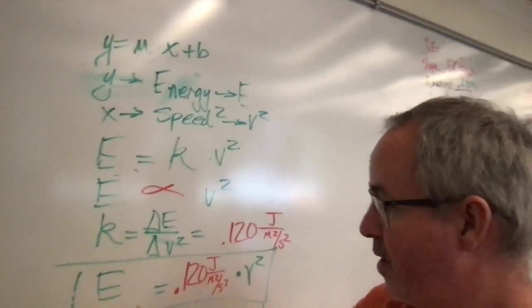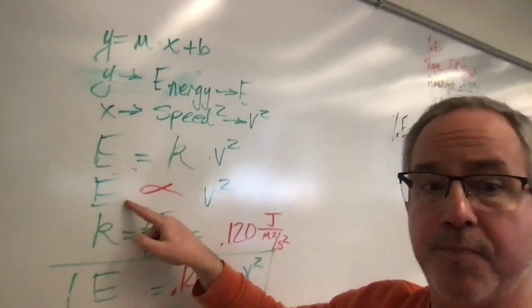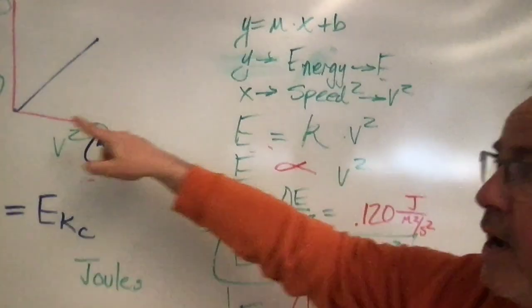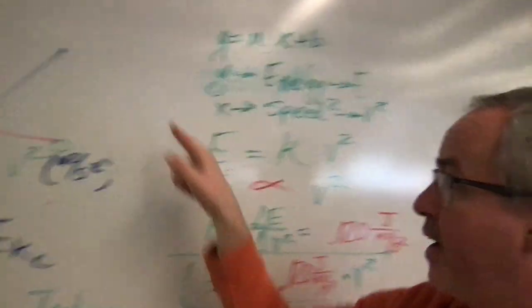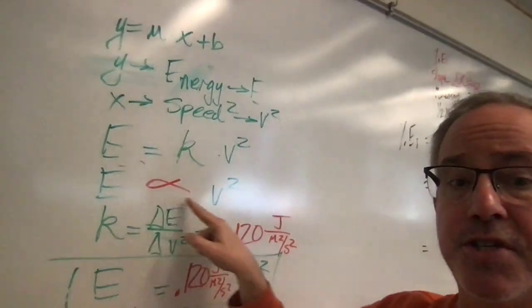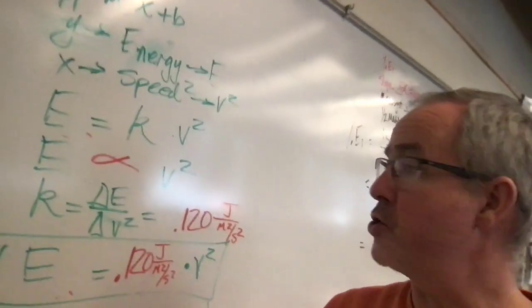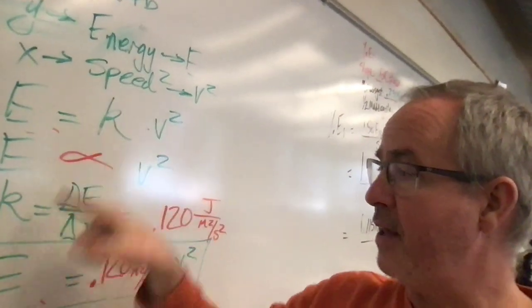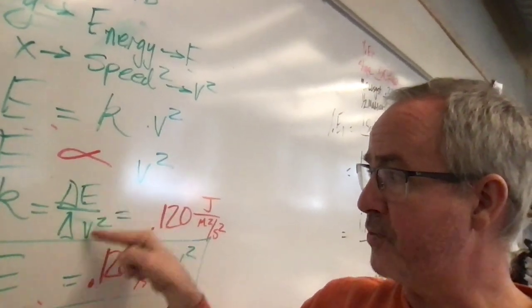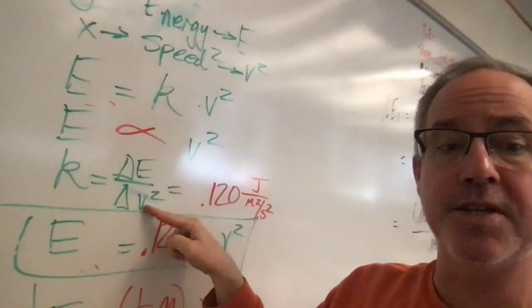And because we have a y-intercept that is zero and a positive constant slope we can now say that energy and speed squared is directly proportional. Next up, how would you calculate that constant k? Well we do the rise over run or change in energy divided by change in speed squared.